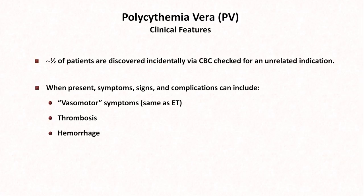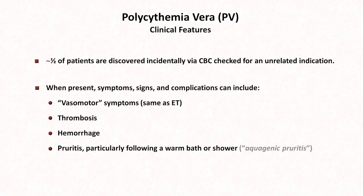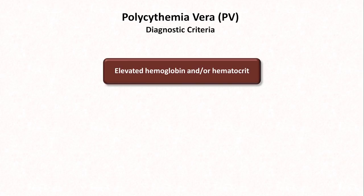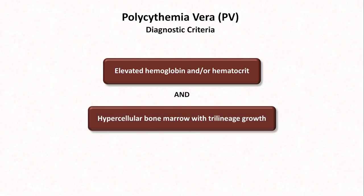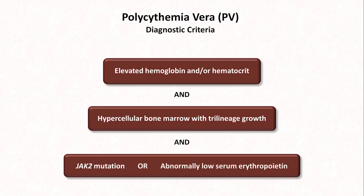Additional features of PV include pruritus following a warm bath or shower, which can be severe — sometimes called aquagenic pruritus. Patients with PV also develop hypertension and splenomegaly. To establish a diagnosis of PV, the patient must have an elevated hemoglobin and/or hematocrit, a hypercellular bone marrow with trilineage growth, and either a JAK2 mutation or an abnormally low serum erythropoietin. A high erythropoietin in a patient with polycythemia would suggest an adaptive response to chronic lung disease or high altitude rather than a myeloproliferative disease. Erythropoietin-producing tumors are also a rare cause of secondary polycythemia and would not be considered PV.